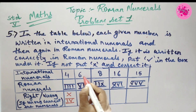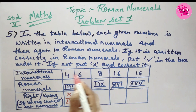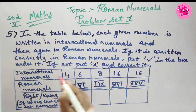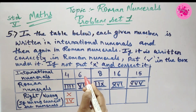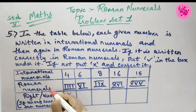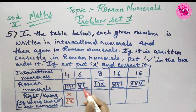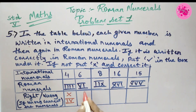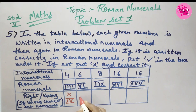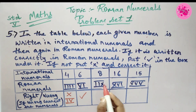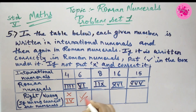Number 2: International numeral 6, and the Roman numeral VI (V and I) is given. So children, it is correct — put the correct tick symbol.